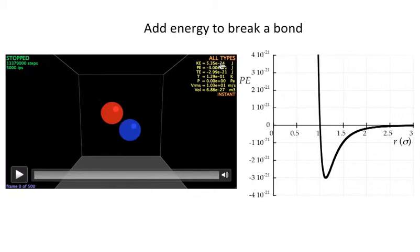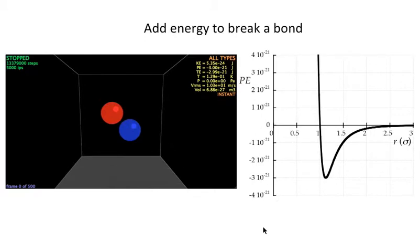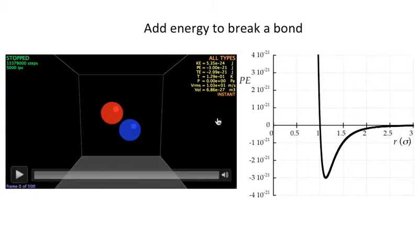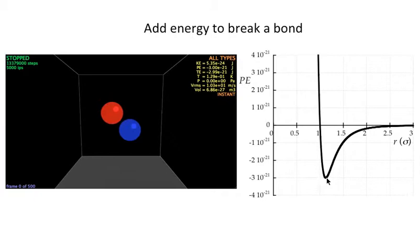The kinetic energy is very tiny. It tells you that the temperature is very low, or also that the thermal energy is very small. So the total energy, this minus 3 times 10 to the minus 21, this number right here, is potential energy. It's also bond energy. Because there's no thermal energy, it's all bond energy.